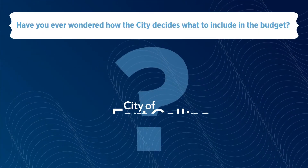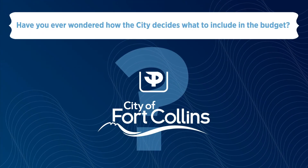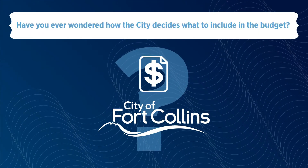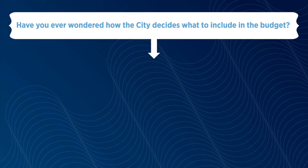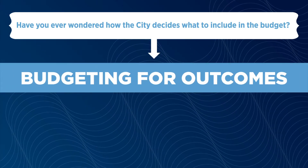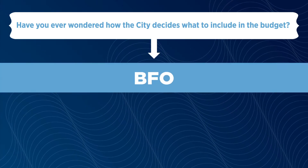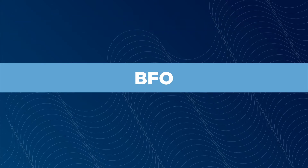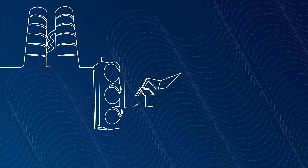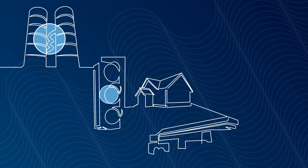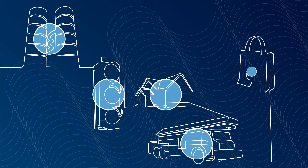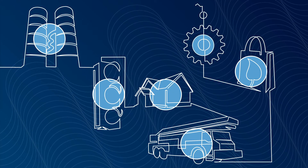Have you ever wondered how the city decides what to include in the budget? The city uses a process called Budgeting for Outcomes, or BFO for short. Compared to a traditional budgeting process based on past department spending, BFO focuses on the programs and services that are most important to the community.